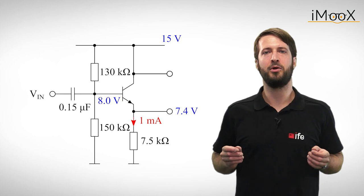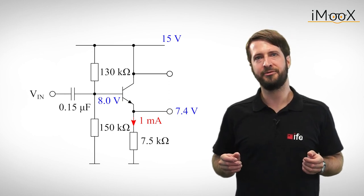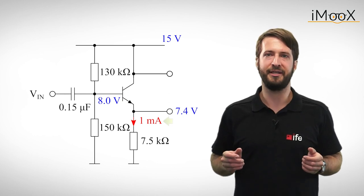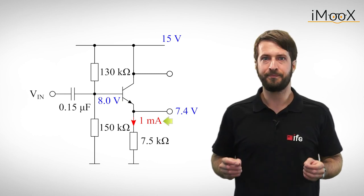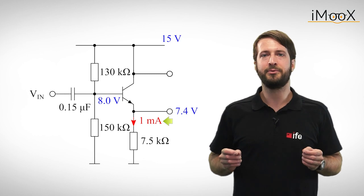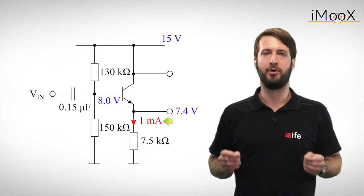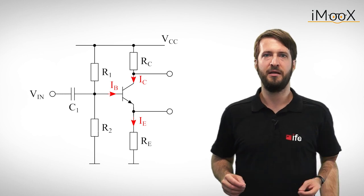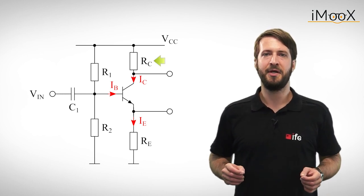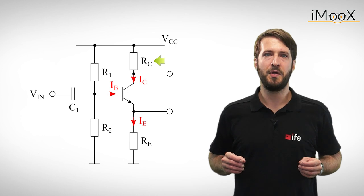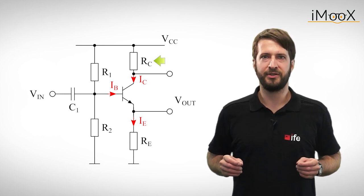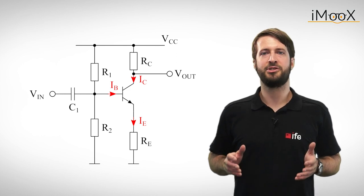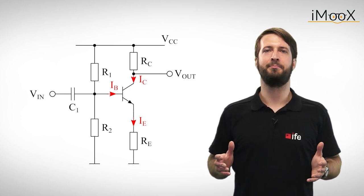If we want to amplify a small AC voltage, like a microphone signal, we first need to transform the output current IE into a voltage. And what's the easiest way to transform a current into a voltage? Yes, we need a resistor. If we simply add a resistor at the collector of the transistor and move the output to the collector, we can build ourselves a basic voltage amplifier, which is also called the common emitter amplifier.